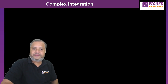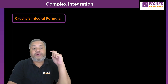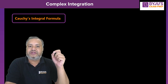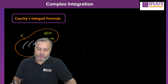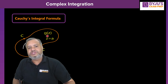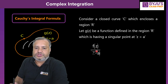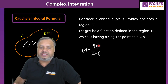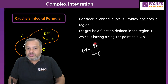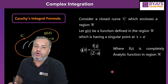Now we are going to discuss Cauchy's integral formula. In this case, the function f(z) will not be completely analytic — it will have certain singular points in the desired region. We have a closed curve C enclosing region R, and a function g(z) having a singular point at z = a. This g(z) can be represented as f(z) / (z − a), separating the singular point. The f(z) in the numerator is completely analytic. This kind of question can be solved using Cauchy's integral formula.